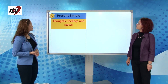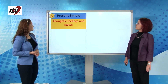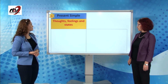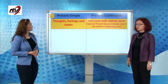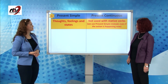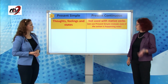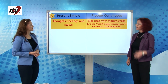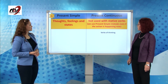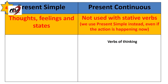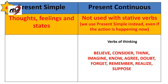The fourth use: we use present simple to express our thoughts, feelings and states, but we don't use present continuous with stative verbs — we use present simple instead, even if the action is happening now. Stative verbs are divided into categories. Verbs of thinking: believe, consider, think, imagine, know, forget, agree — verbs connected with our head. Examples: I don't believe it, is that really true? Or I think I can do this.